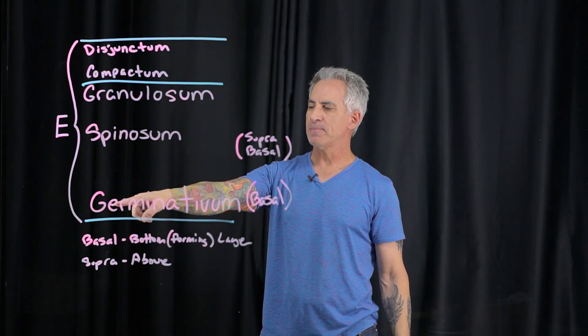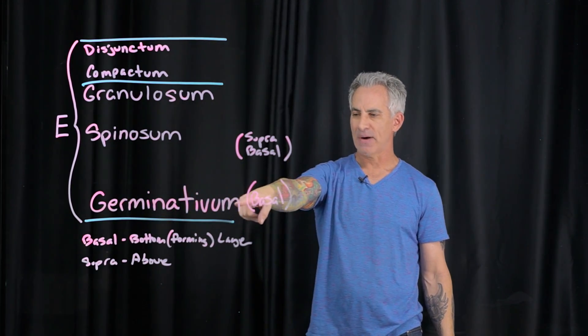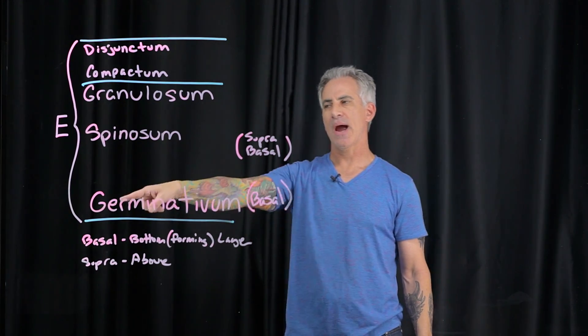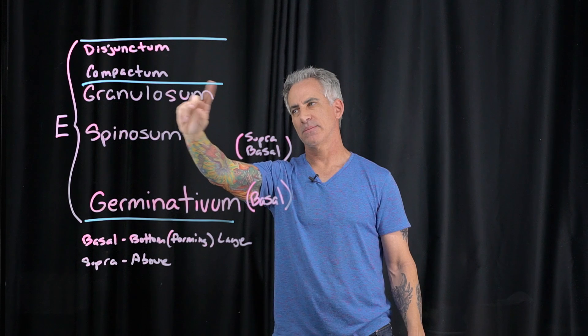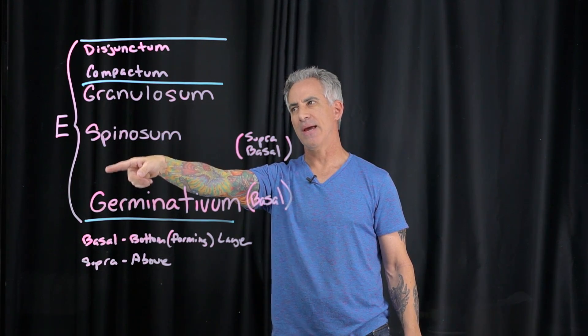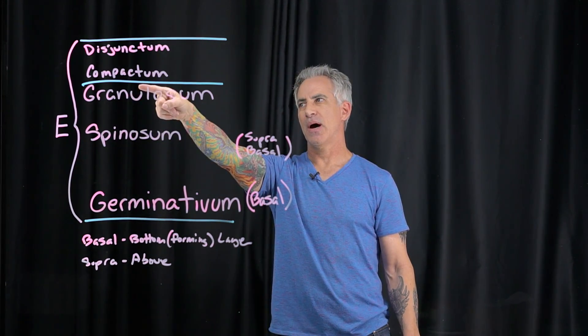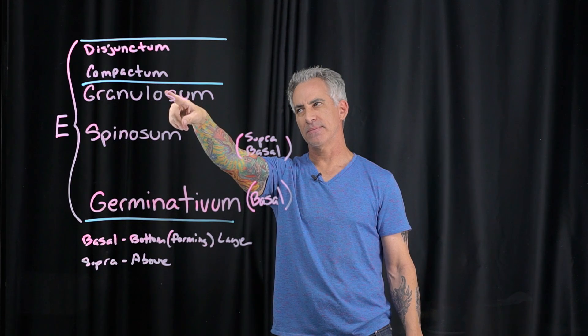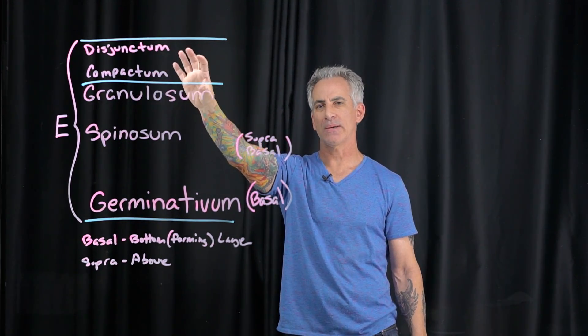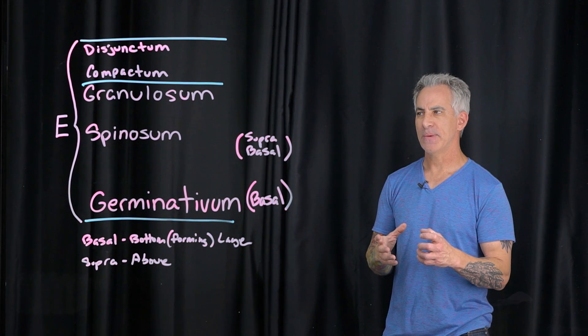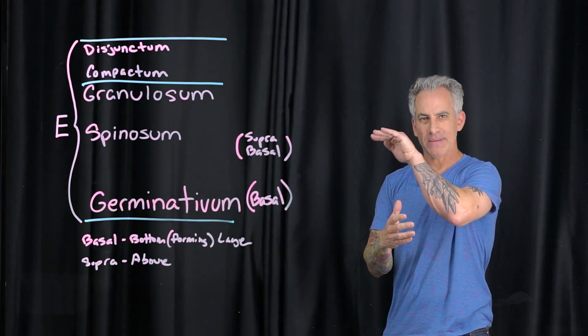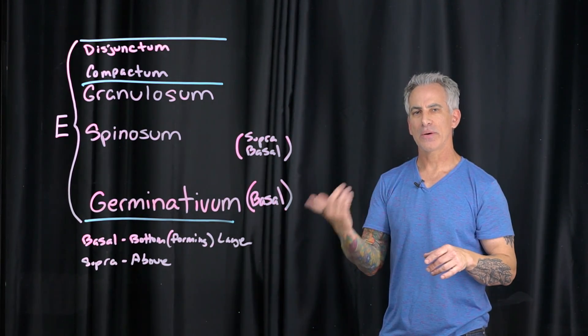So this is the germinativum, and that's stratum spinosum, stratum granulosum, stratum compactum, stratum disjunctum, and then the stratum corneum as a whole to describe stratified, meaning layered, corneocytes.